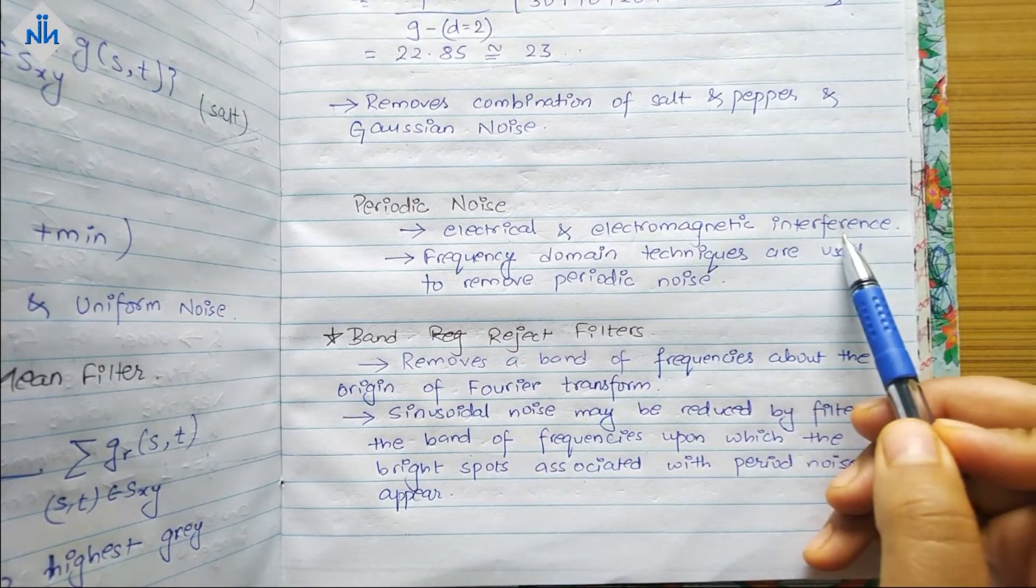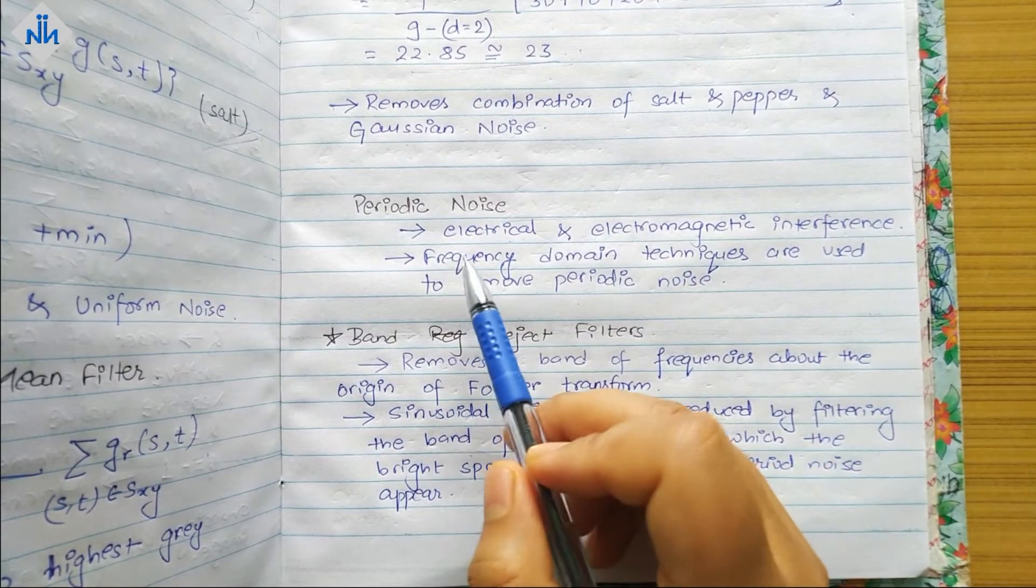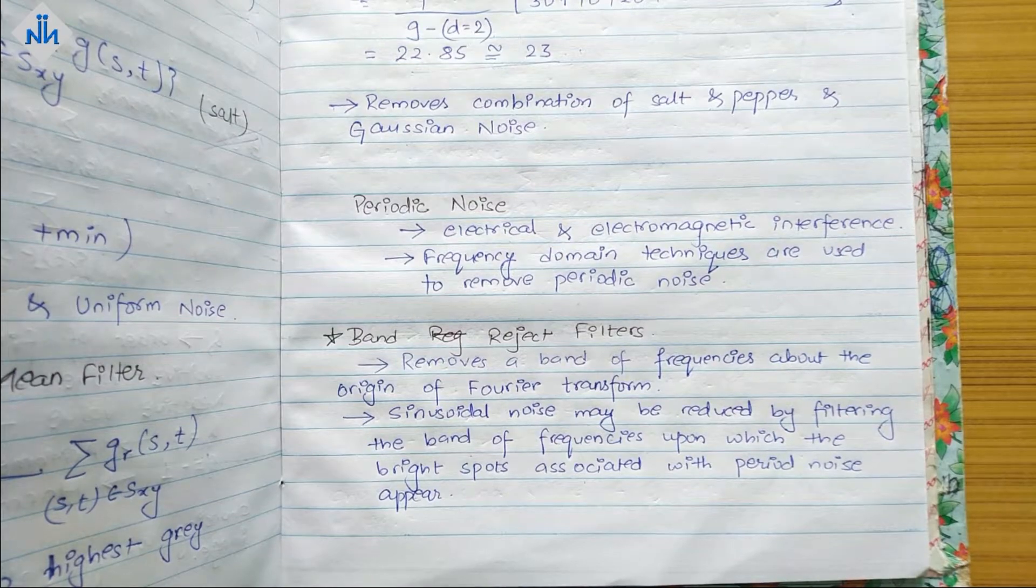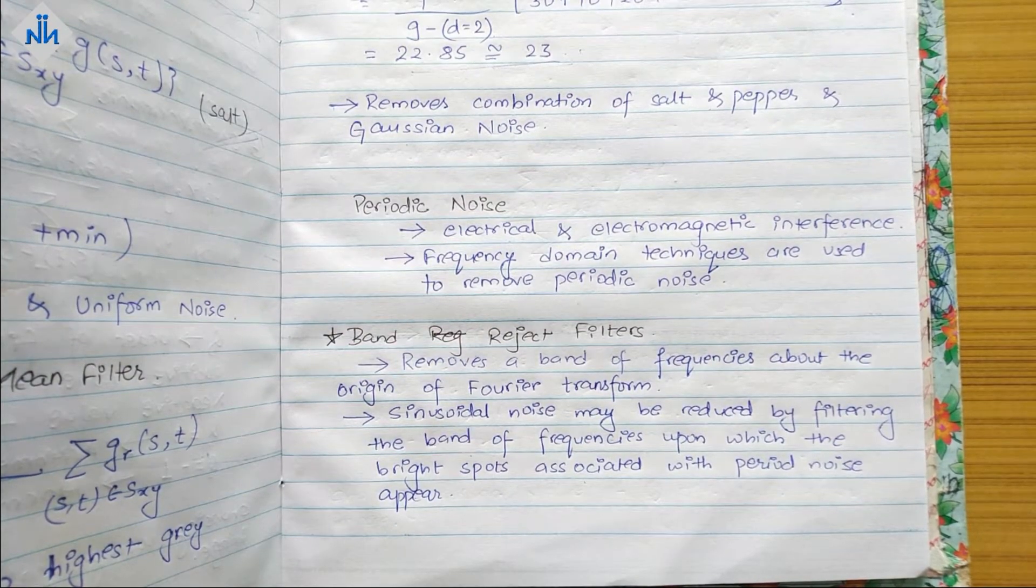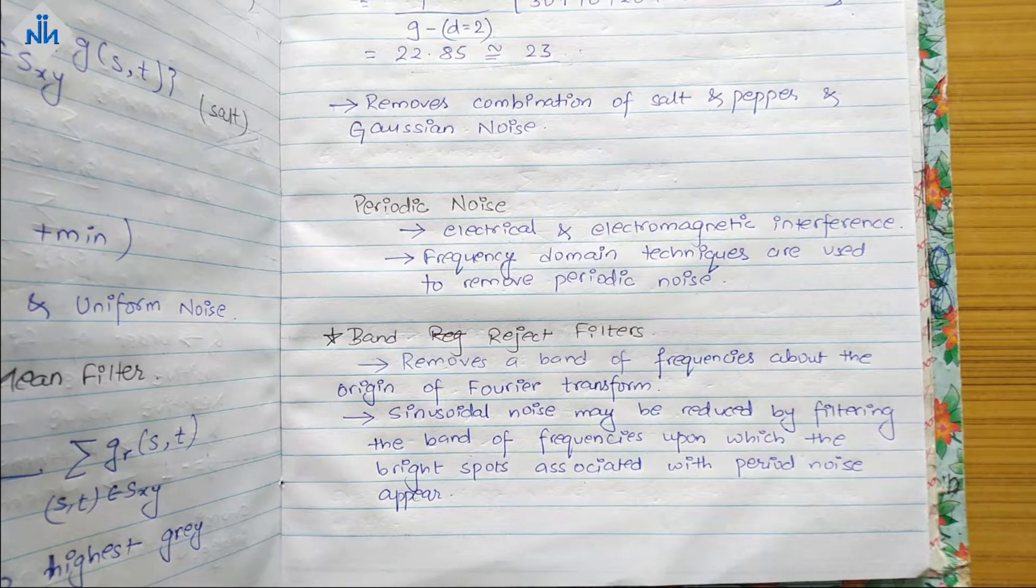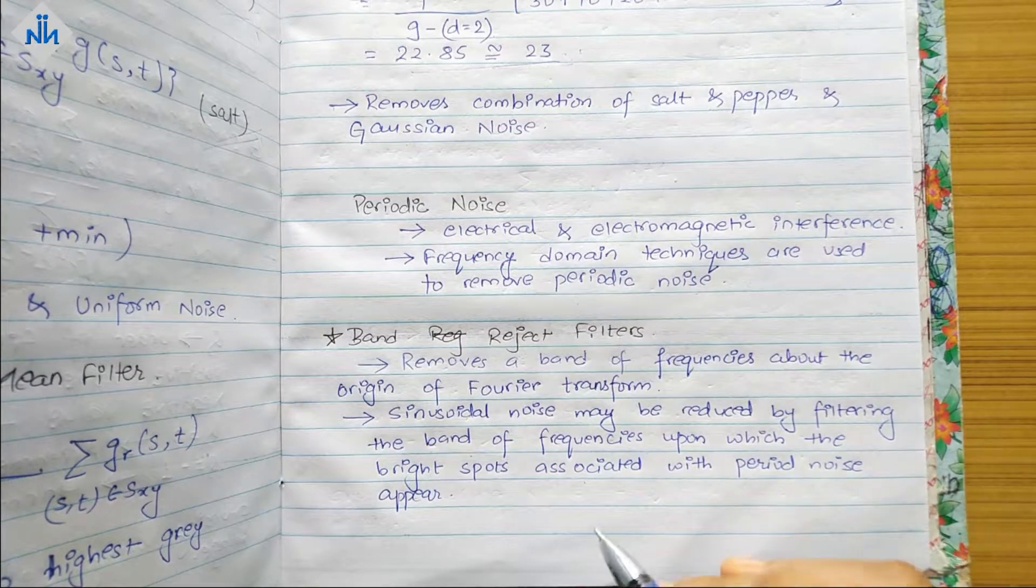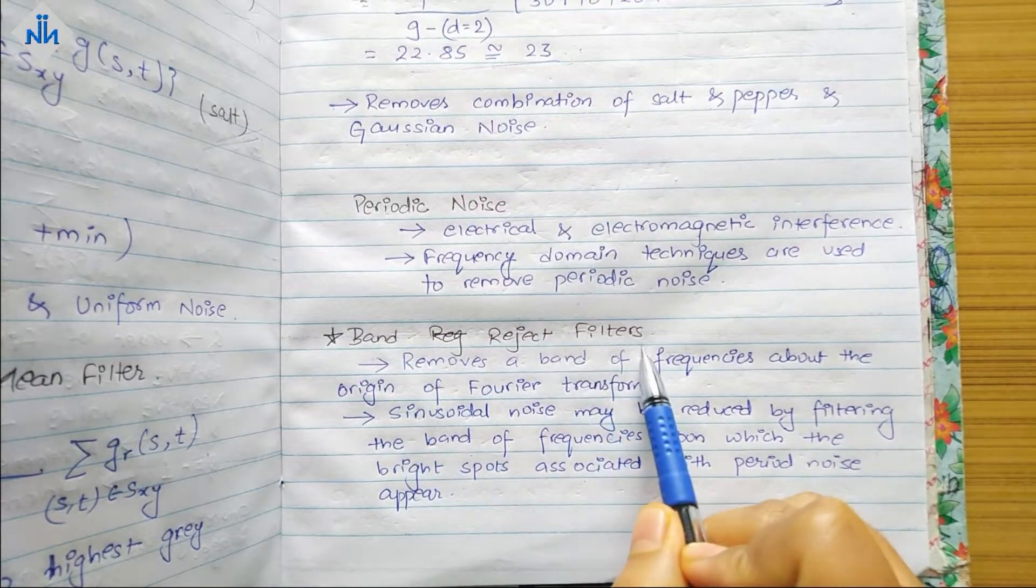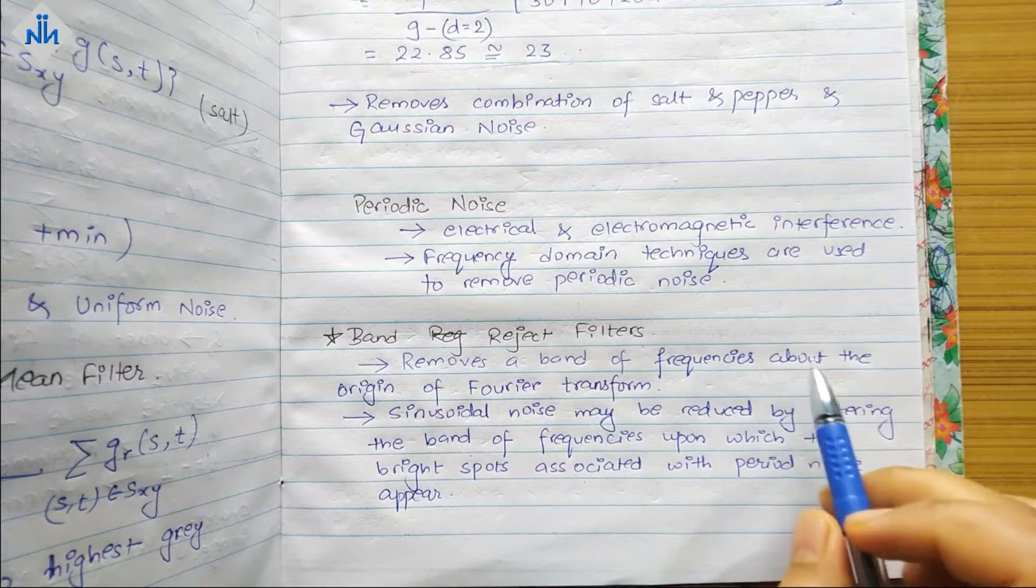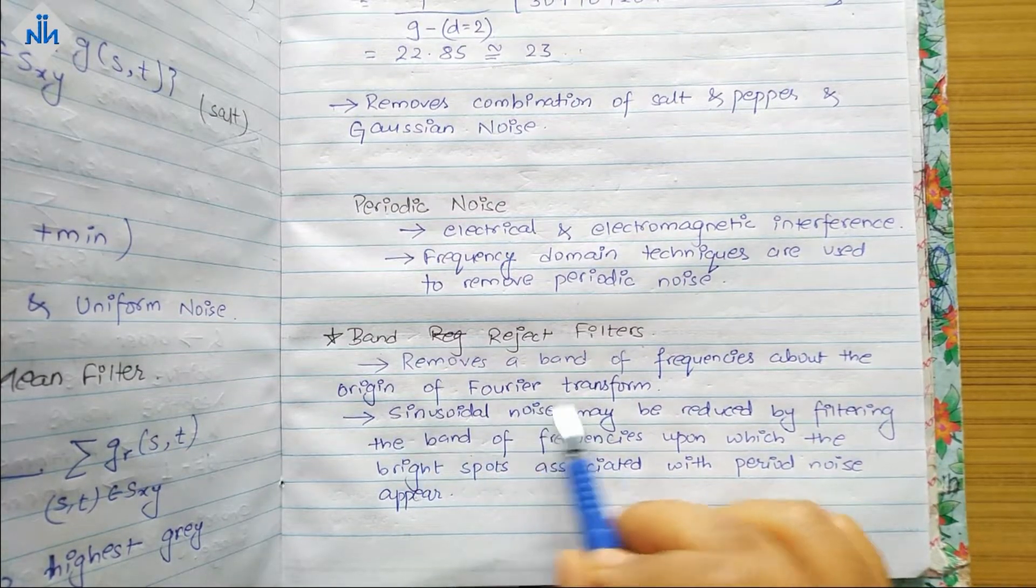Frequency domain techniques are used to remove such periodic noise that are injected by electrical and electromagnetic interference. We can use all of the frequency domain techniques, but here we are talking about band reject filters. Band reject filter removes the band of frequency about the origin of Fourier transform.